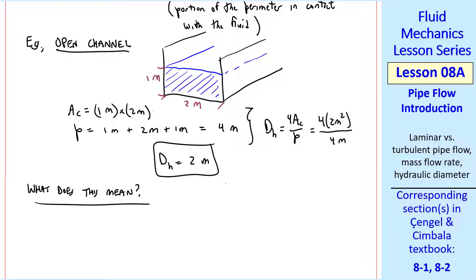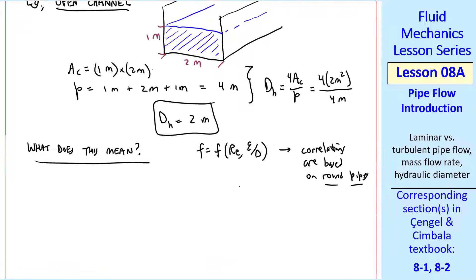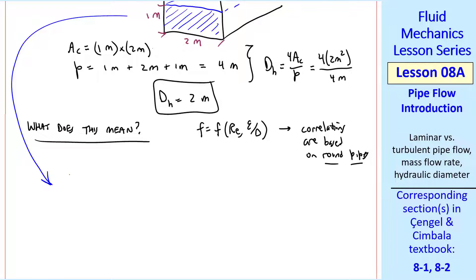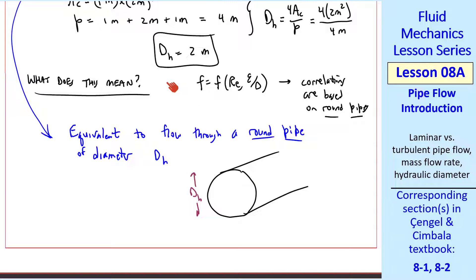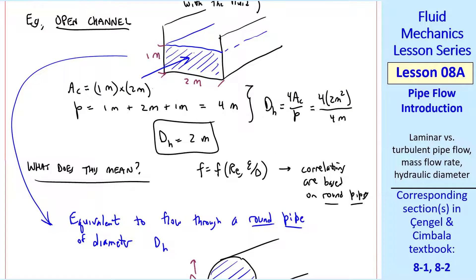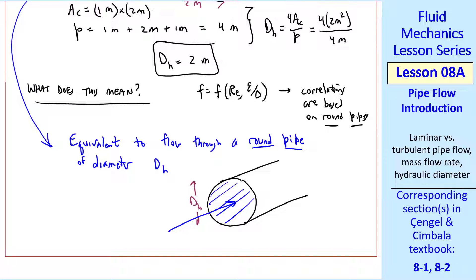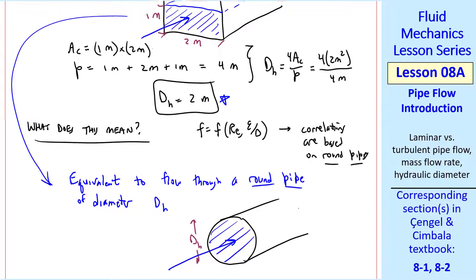What does this mean and why do we use hydraulic diameter? As we'll see later, there are correlations and empirical equations for Darcy friction factor f as a function of Reynolds number. And those are all based on round pipes. We'd like to use these correlations even if the pipe is not round. So what we're saying is that this actual channel is equivalent to flow through a round pipe of diameter DH. Here we calculated our DH as 2 meters. So flow through this circular pipe is equivalent to flow through this actual pipe or channel if we use hydraulic diameter.